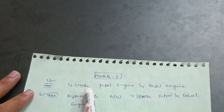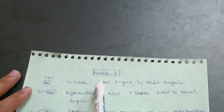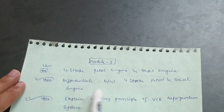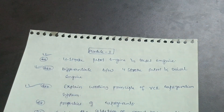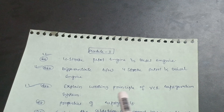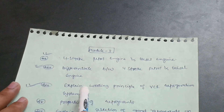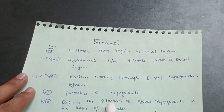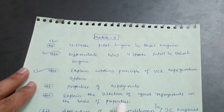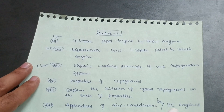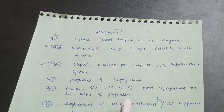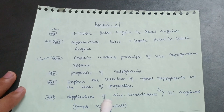Module 3 is a typical part. Focus on the four-stroke petrol engine and diesel engine — this is the most important question. Sometimes they will ask you to differentiate between four-stroke petrol and diesel engines. Another frequently asked question from the 2018 scheme is: explain the working principle of a VCR refrigeration system, properties of refrigerants, and selection of good refrigerants based on their properties. Also cover applications of air conditioners and IC engines.